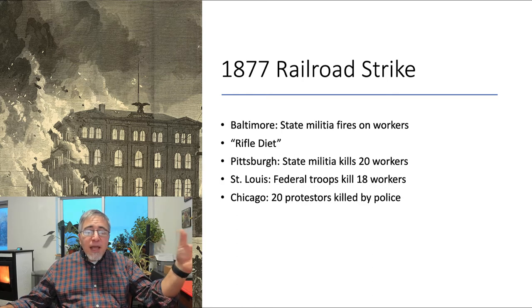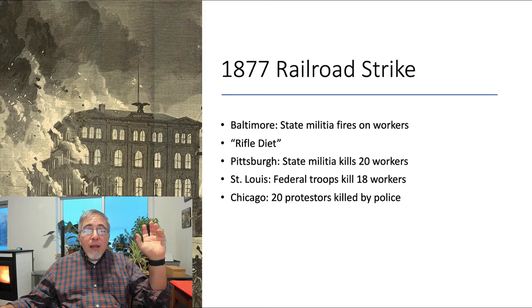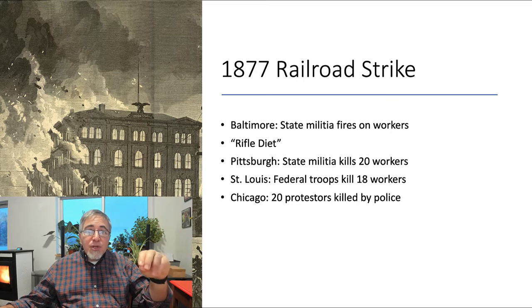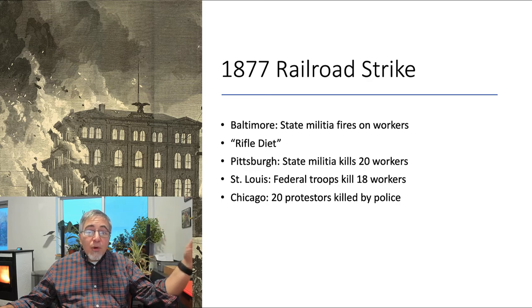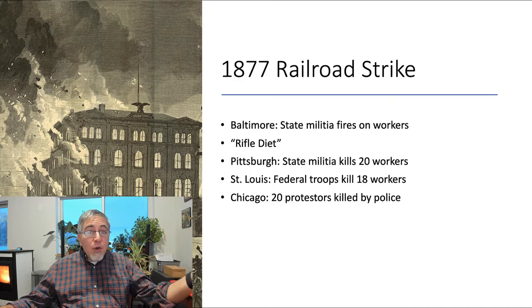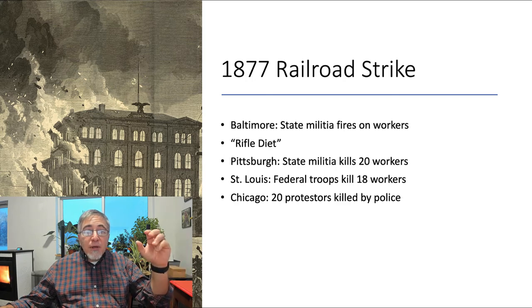Panicked business leaders and their political allies reacted quickly. When local police forces would not or could not suppress the strikes, governors called on state militias or even on federal troops to break them and to restore rail service. Many striking workers destroyed rail property rather than allowing militias to reopen the rails. The protest approached a class war.